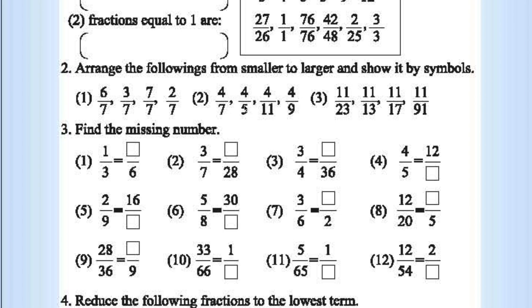Here the numerator is the same but the denominators are different. So 4 by 5 is the greatest and 4 by 11 is the least. After that: 11 by 23, then 11 by 17, then 11 by 13.